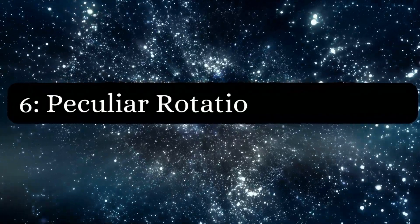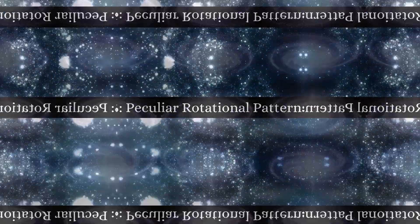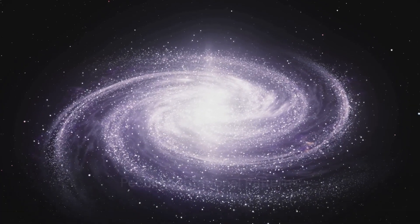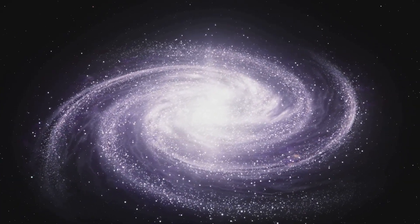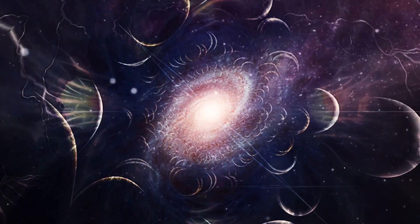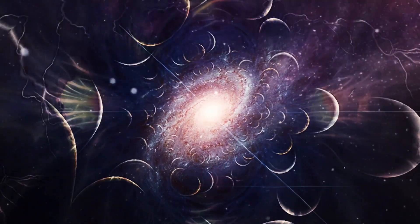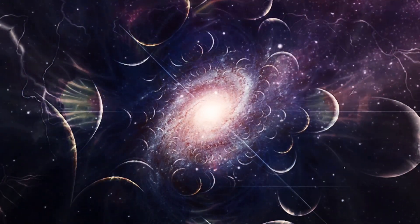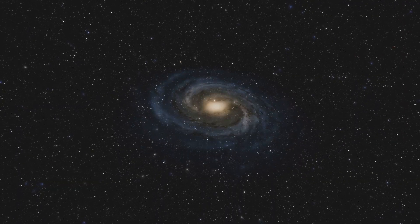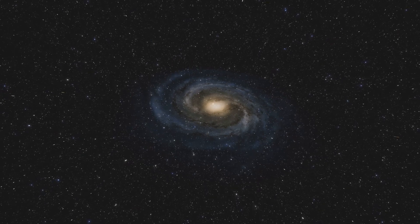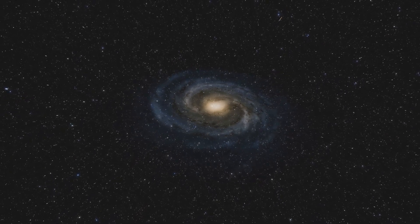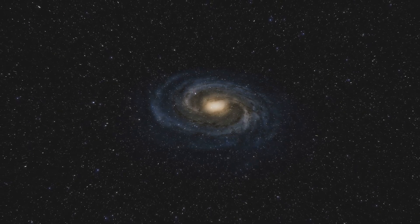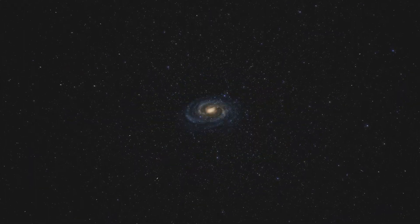Next on our list at number 6, peculiar rotational patterns. Why do galaxies spin in such peculiar patterns? That's the question that has left astronomers scratching their heads. You see, galaxies, vast cosmic whirlpools of stars, dust, and gas, spin in a way that doesn't quite align with the laws of physics as we understand them. According to conventional physics, the stars at the edges of a galaxy should move slower than those near the center, just like the outer edges of a spinning vinyl record move slower than the inner parts. But that's not what we observe.